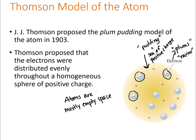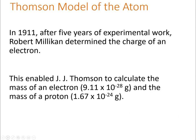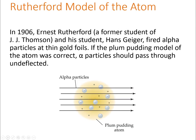A few years later, Robert Millikan determined the charge of an electron, which enabled J.J. Thomson to calculate the mass of the electron and the proton. But let's step back — I mentioned the proton, which wasn't part of the plum pudding model, so something must have happened in between. Ernest Rutherford was a student of J.J. Thomson and eventually ran his own lab.